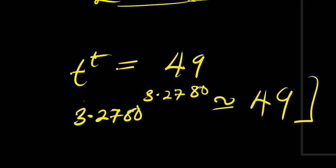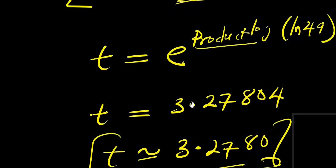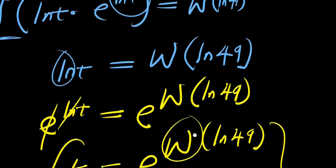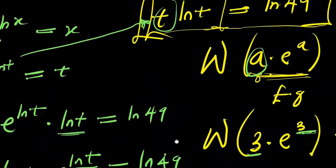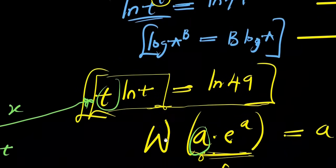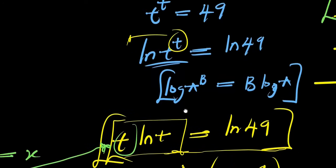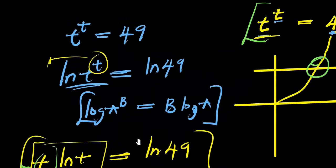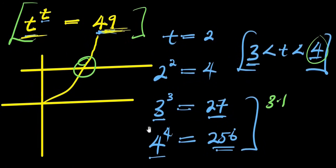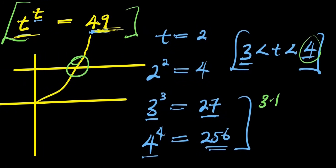That is how to solve this exponential equation t^t = 49. We introduced the Lambert W function, verified graphically that there is only one solution, and found t ≈ 3.2780. If you raise 3.2780 to the power of 3.2780 you get approximately 49. Thank you and goodbye.